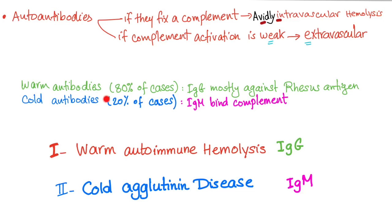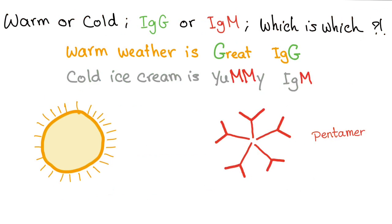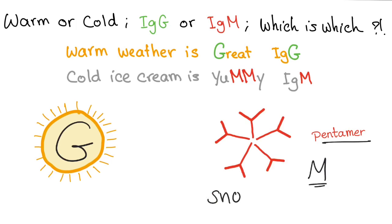Warm autoantibodies account for 80% of cases — IgG, mostly against rhesus antigen. Cold antibodies are 20% of cases — IgM binds the complement, usually avidly, so it's intravascular hemolysis. To remember which is which: draw G inside the sun — IgG is warm. And IgM is a pentamer, which looks like a snowflake, so IgM is cold.